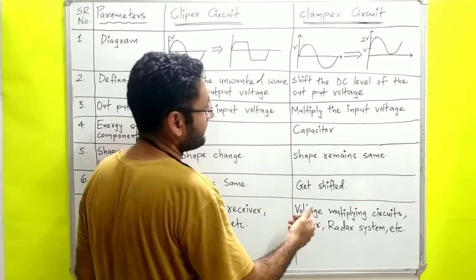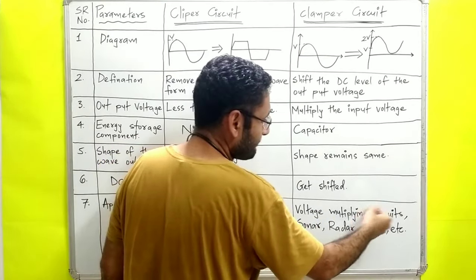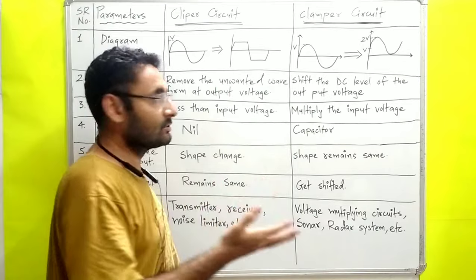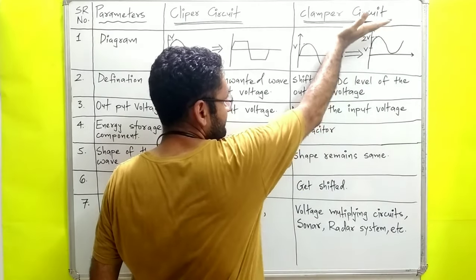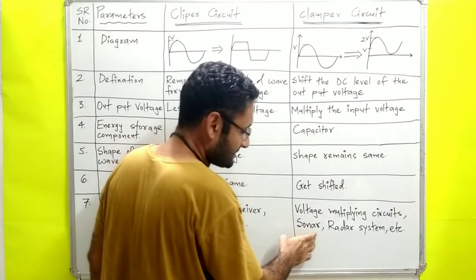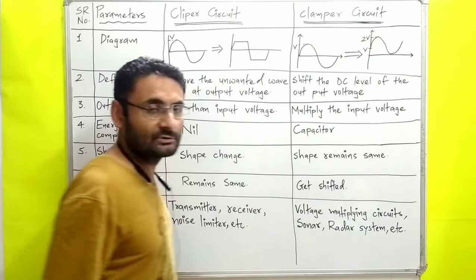The clamper circuit is used in voltage multiplying circuits, wherever voltage needs to be increased, because the DC level shifts and output voltage increases. It is used in sonar systems, radar systems, etc.